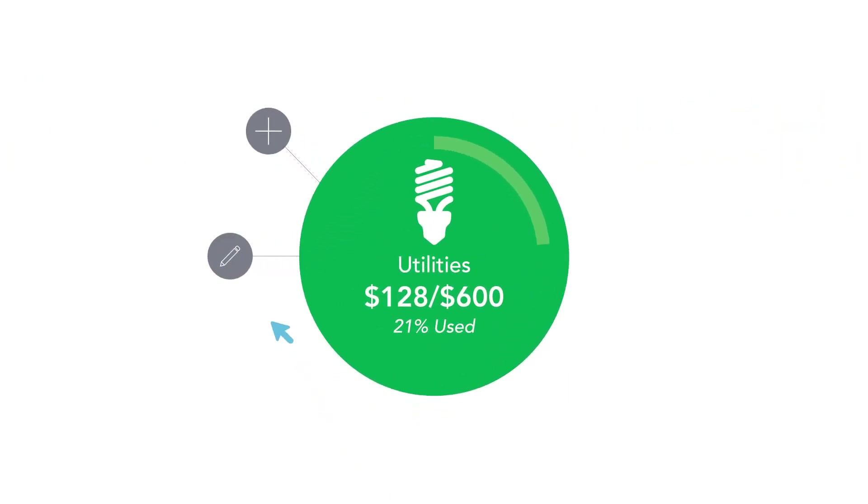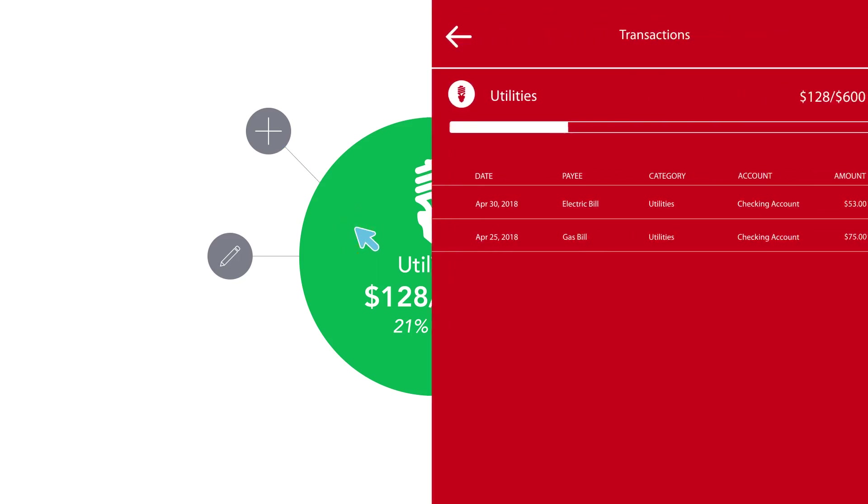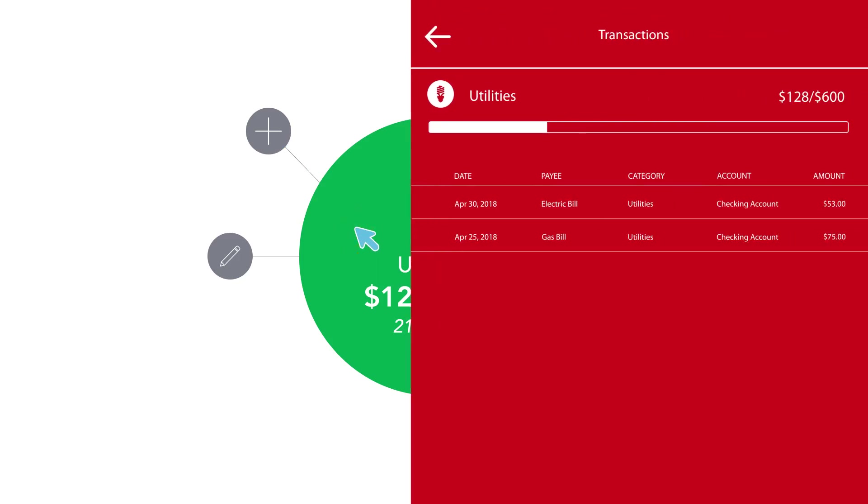Click on a bubble to edit allowances, add subcategories, or to view transaction details.